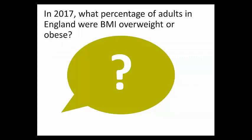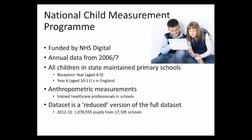Those are just examples of the kinds of interesting things you can look at with the Health Survey for England. Moving on to the National Child Measurement Programme — again funded by NHS Digital — its aim is to monitor obesity amongst children and inform planning. It was first established in 2005 and data are available from the Data Service from 2006 to 2007 onwards. It takes place within all state-maintained schools, with some private schools also able to take part.